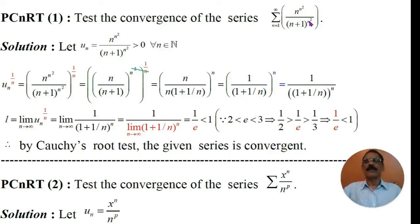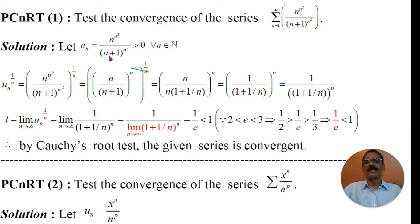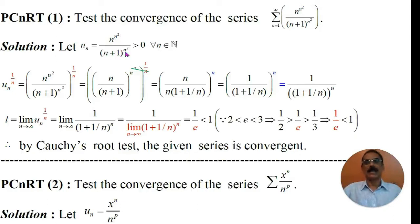Let us consider the given series as series u_n. Therefore, let u_n be equal to n to the power n squared divided by n plus 1 to the power n squared, which is greater than 0. Everything is positive because where n is a natural number, everything is in terms of n and hence it is positive. That is, the given series is a series of positive terms, with u_n greater than 0 for all n belonging to the natural numbers.